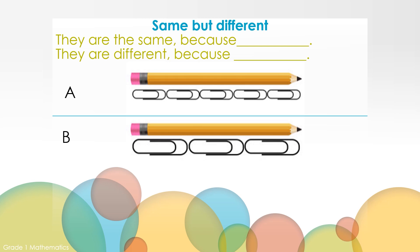They are different because they have different sizes of paperclips under the pencil. A is different because it has more paperclips than B, and A has smaller paperclips — A has five smaller paperclips. B is different because it has fewer paperclips than A, and B has larger paperclips. B has three large paperclips.